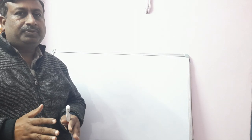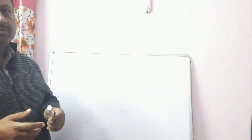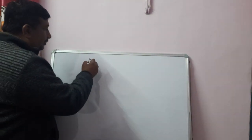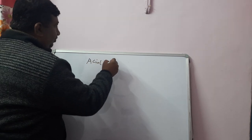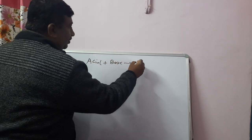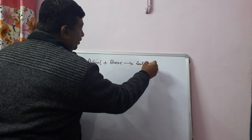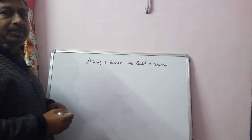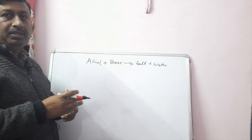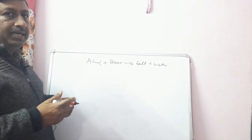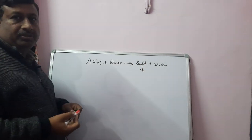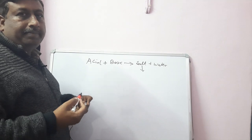All these soils are salt-affected soils, so first we need to know what salts are. Salts are reaction products of acid and base — when acid reacts with base, there is formation of salt and water. The type of salt decides whether the soil is saline, alkali, or saline-alkali. The salts are of three types: neutral salt, acidic salt, and basic salt.